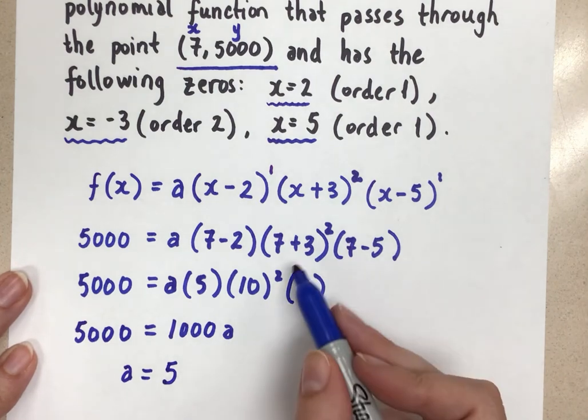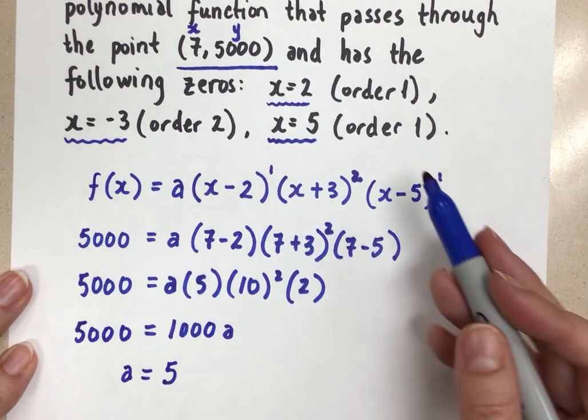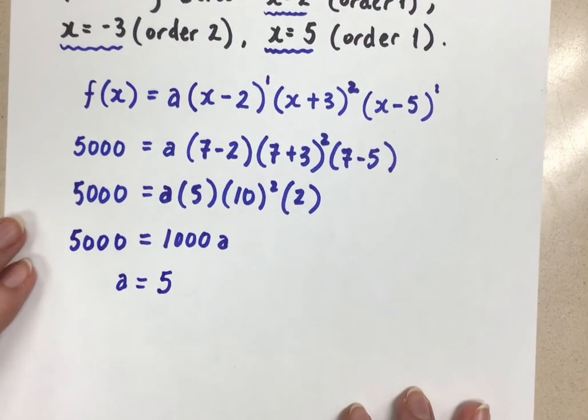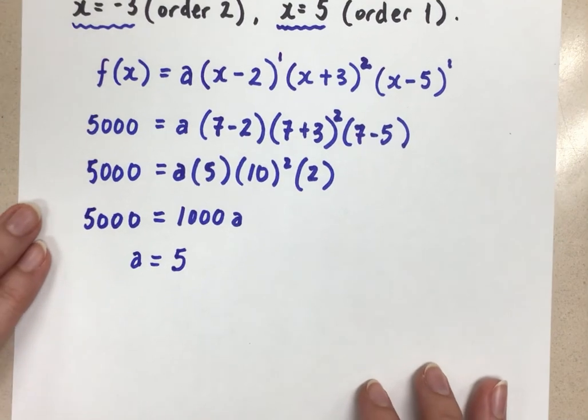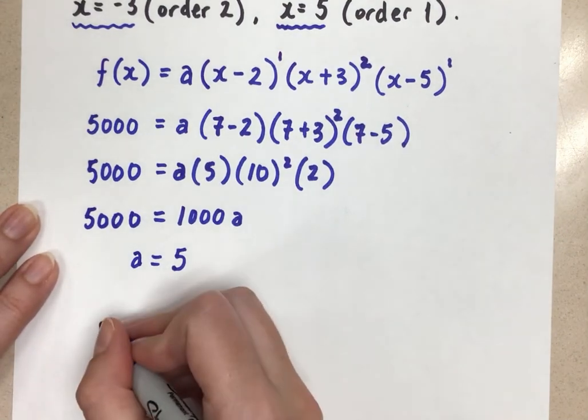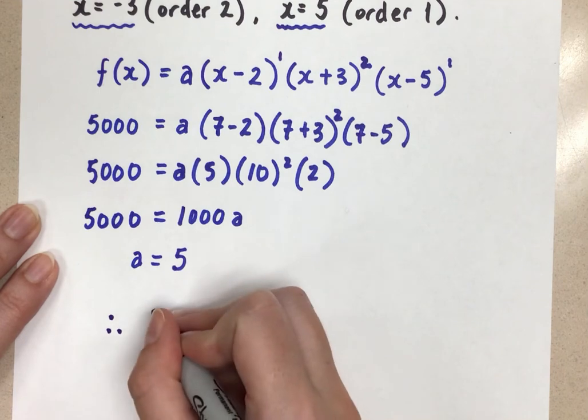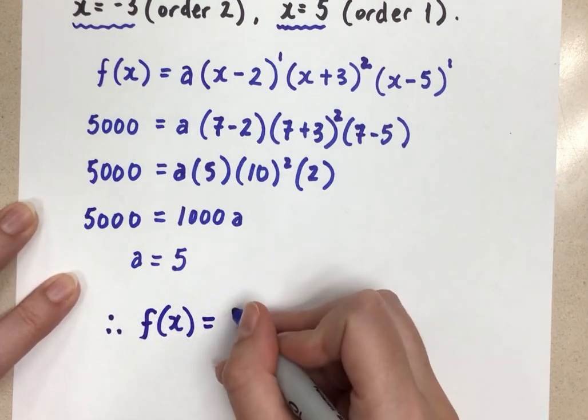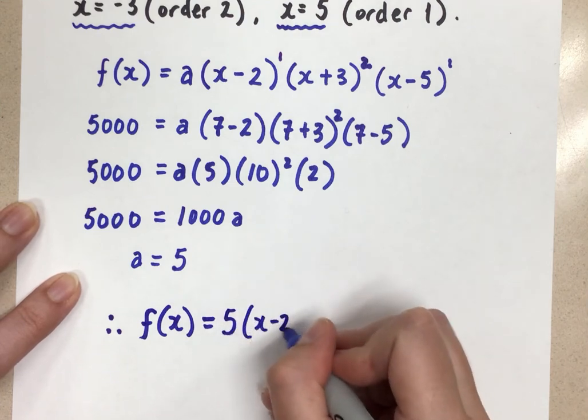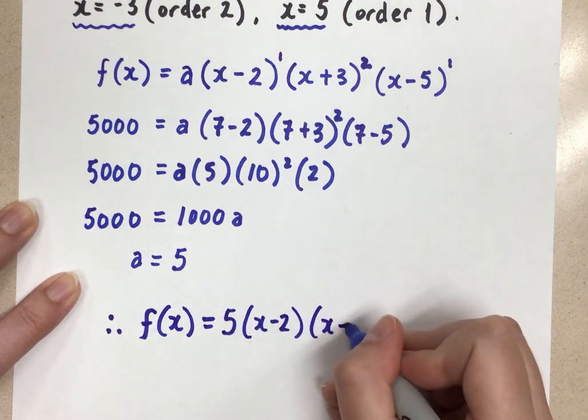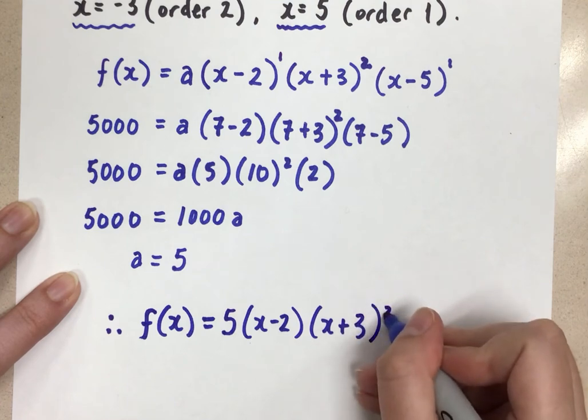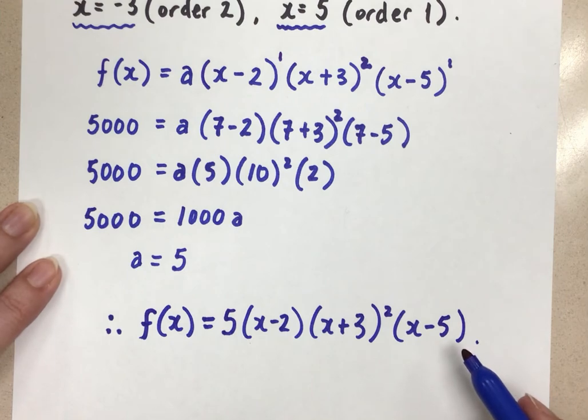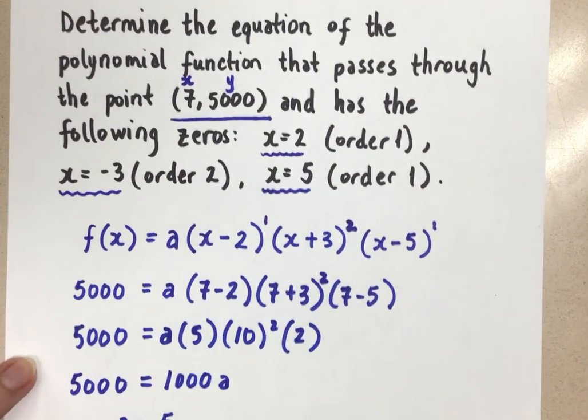That's an important number to get the exact equation that represents the scenario here. So our final step, we want to actually write down what the equation is. We never want to just leave that a equals 5 as the answer because that's not the answer. Our final equation for this polynomial, f of x equals 5 times (x minus 2) times (x plus 3) squared times (x minus 5). And that is our final exact equation for the question that was given here.